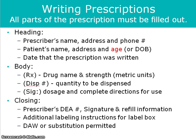The body of the prescription includes the symbol Rx, which is followed by the drug name and the strength in metric units. The metric unit examples are liter, gram, milligram, etc. Then underneath the Rx it will state DISP number, followed by the quantity of tablets, capsules, etc. that are to be dispensed. Underneath that is the symbol SIG followed by the dosage and complete directions for use.